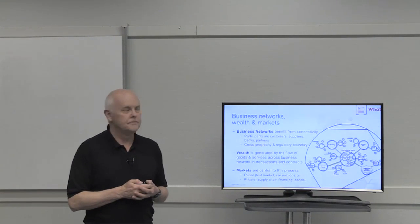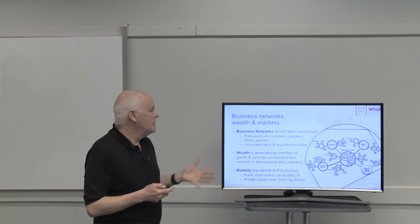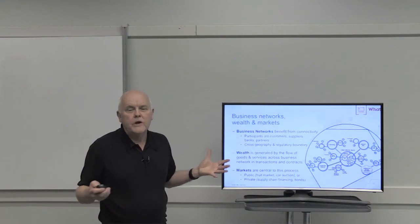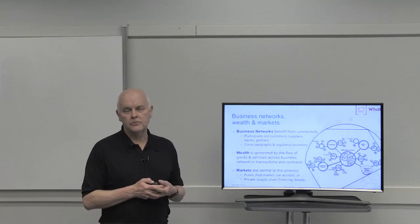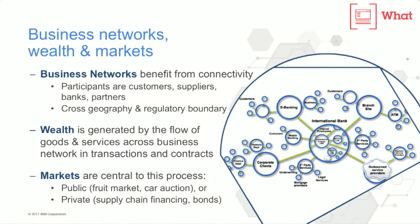Let's get started with the first section. We observe that businesses never operate in isolation. They always work together with other businesses, with governments, with banks, with all different types of organisations within markets. And effectively, wealth is generated by the flow of goods and services across these business networks.